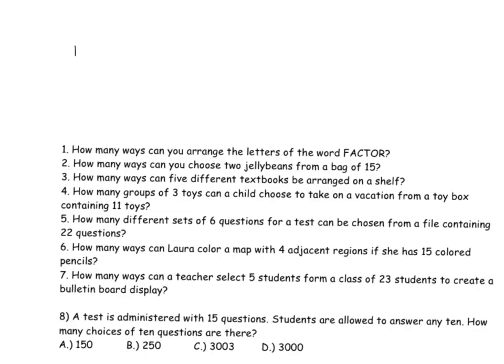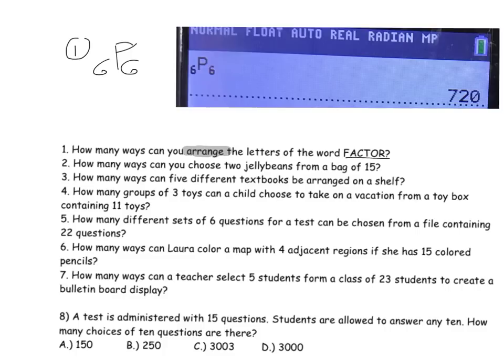Problem one: how many ways can you arrange the letters of the word FACTOR? Arrange is the key word — arrange means to put in order, so you're dealing with a permutation. We have six letters in FACTOR and we're taking permutations of six letters taken six at a time. So it's 6P6, or 720.